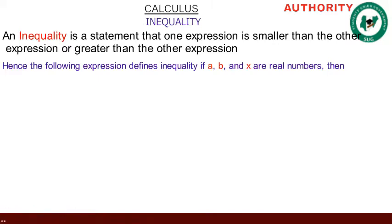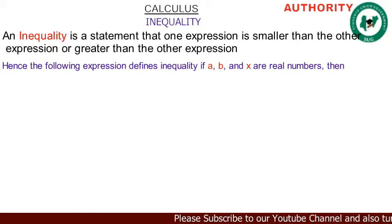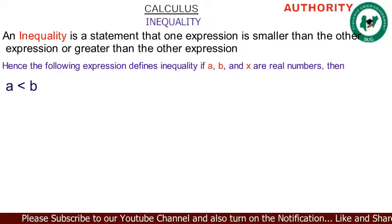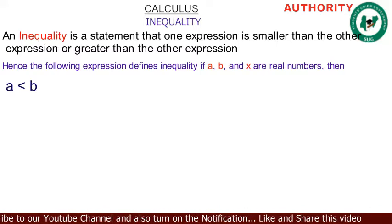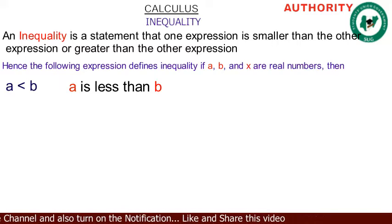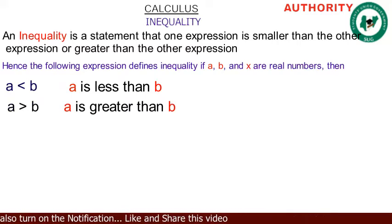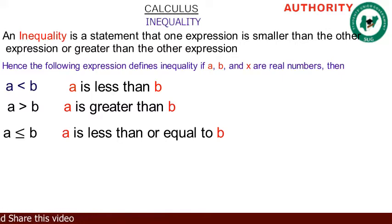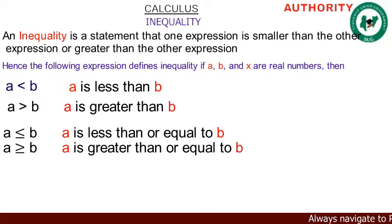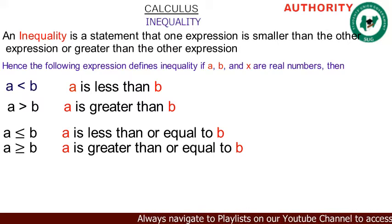The following expressions define inequality. If a, b, and x are real numbers, then 'a < b' means a is less than b, 'a > b' means a is greater than b, 'a ≤ b' means a is less than or equal to b, and 'a ≥ b' means a is greater than or equal to b.